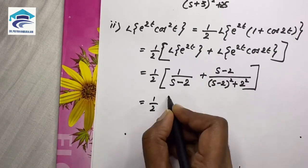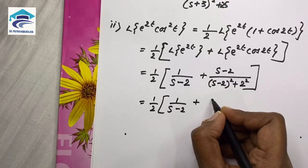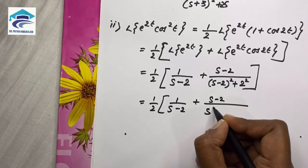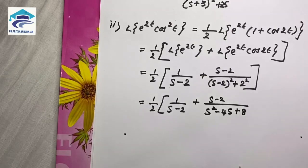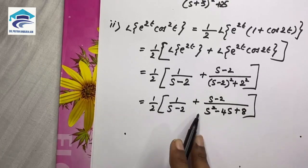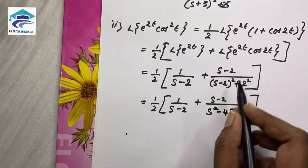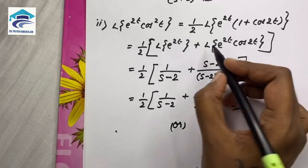This is 1 by 2 into 1 by s minus 2 plus s minus 2 by the denominator. We get s squared minus 4s plus 8. Evaluating this, you're getting s squared minus 4s plus 8. You can either use this method or for this alone,